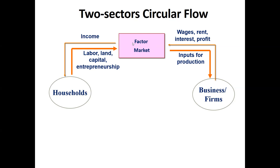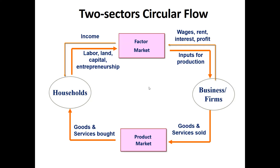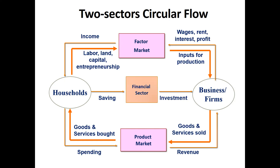Income flows from the business firm through the factor market, reaching towards the household. Next, we come to goods and services. The business firm is manufacturing goods — let's take the example of toothpaste. The business firm produces toothpaste, which goes into the product market. These households use the toothpaste and make payment for it, and they receive the product. Goods and services movement is towards the household, while income movement is shown in brown color and goods movement is shown in orange color. You can see the factor market and product market.